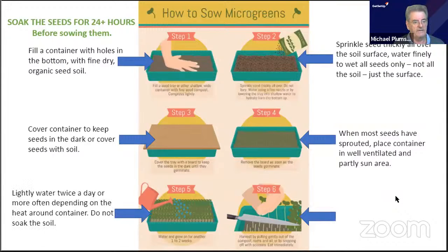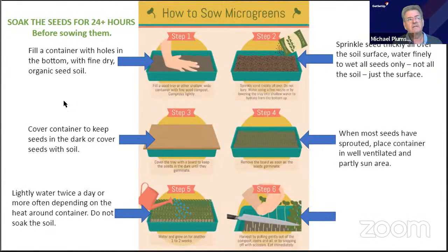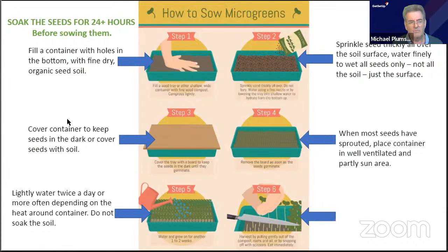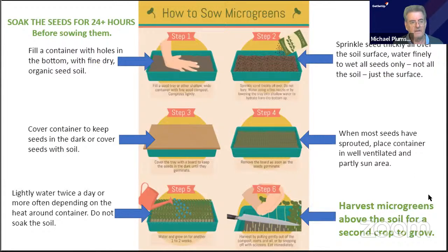For bigger seeds, I soak for 24 hours or at least overnight. For small seeds like alfalfa or chia, I don't soak those. Soaking just helps the process — it'll take a little longer to sprout without it, but it's not essential. It won't do any harm to soak even the small ones.